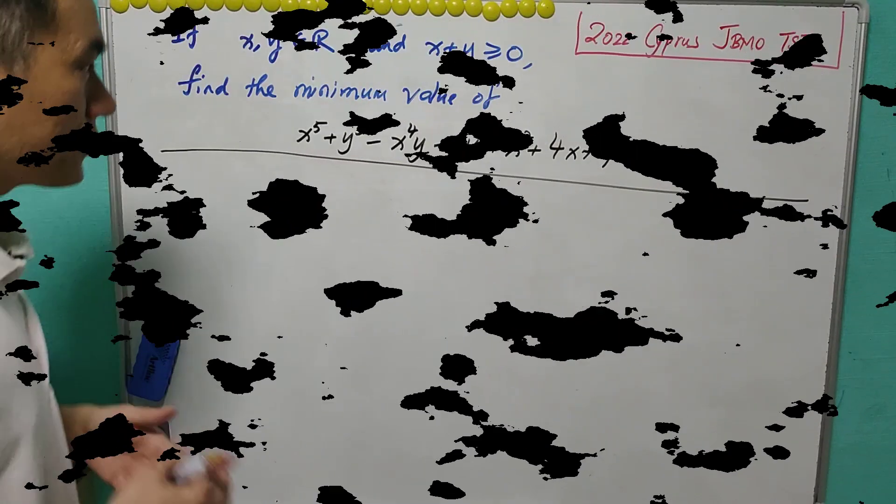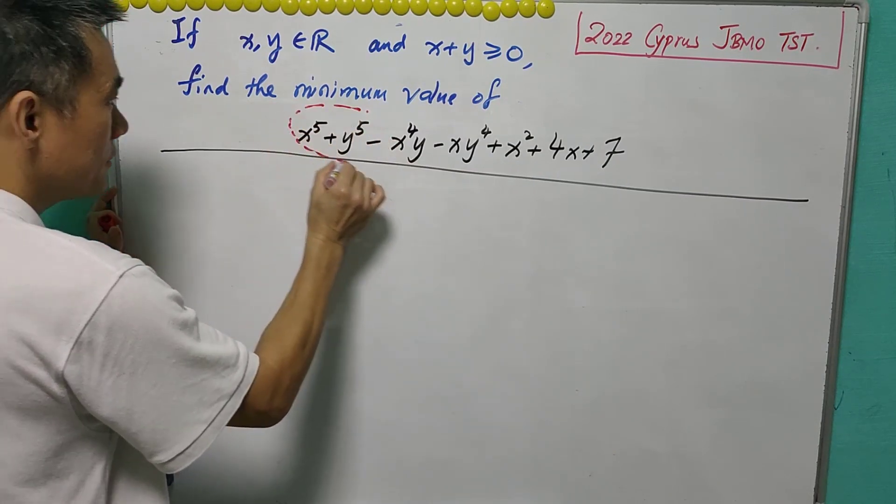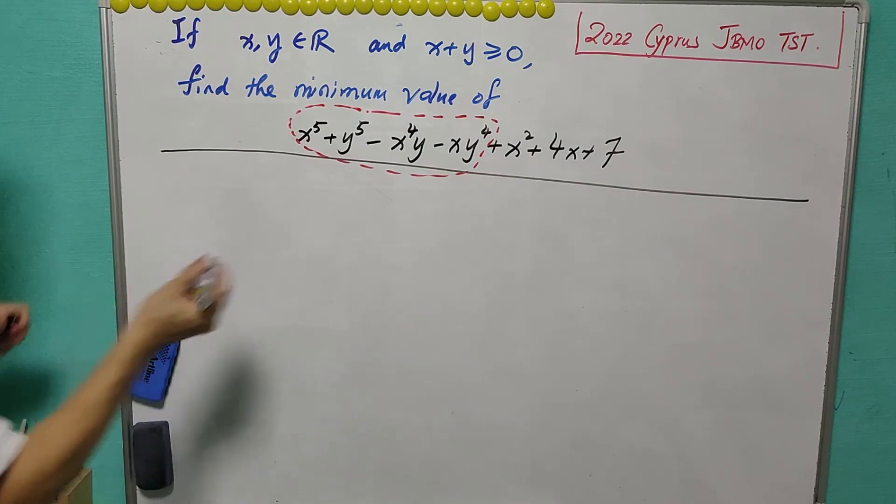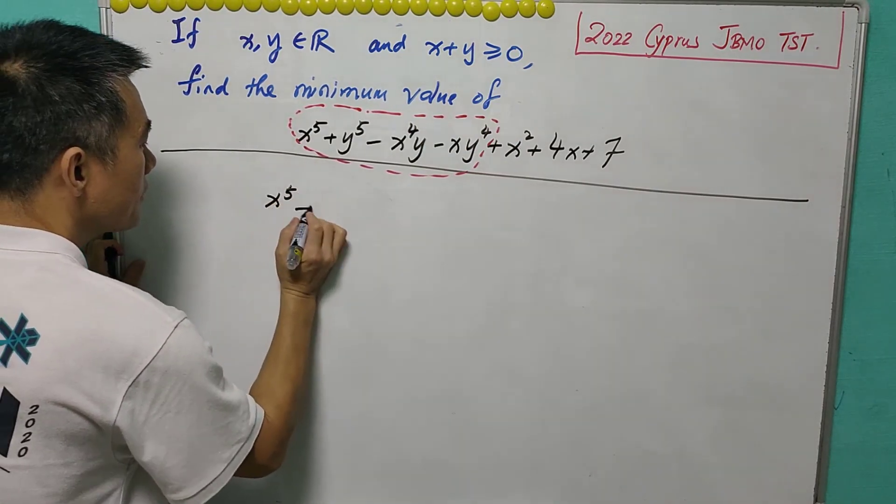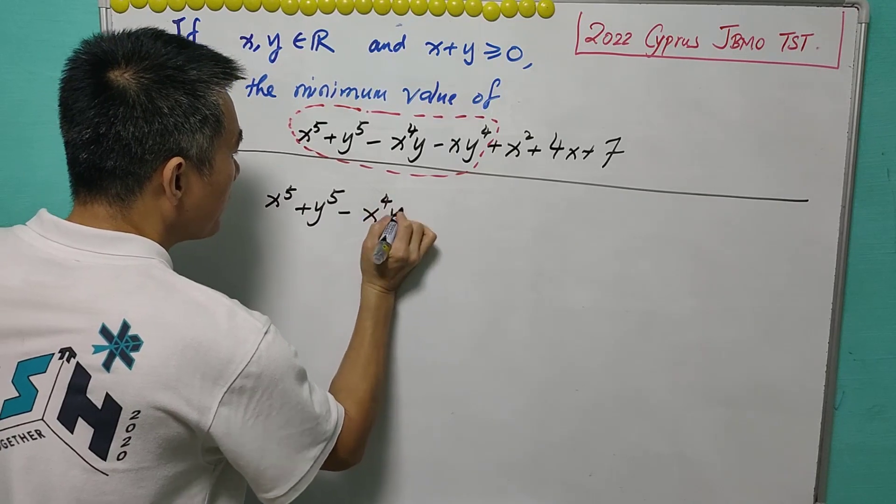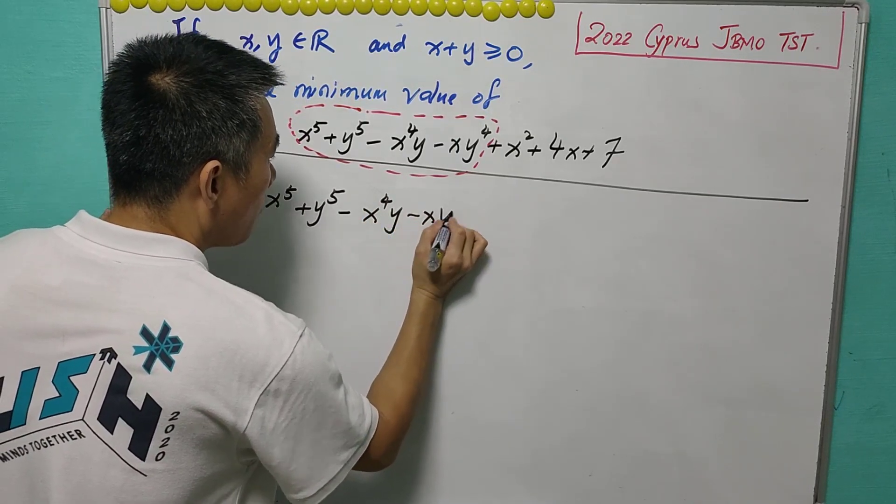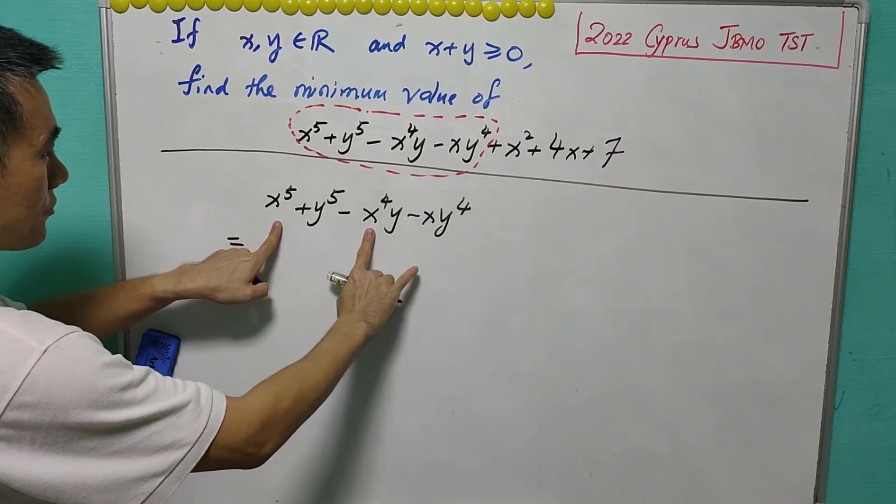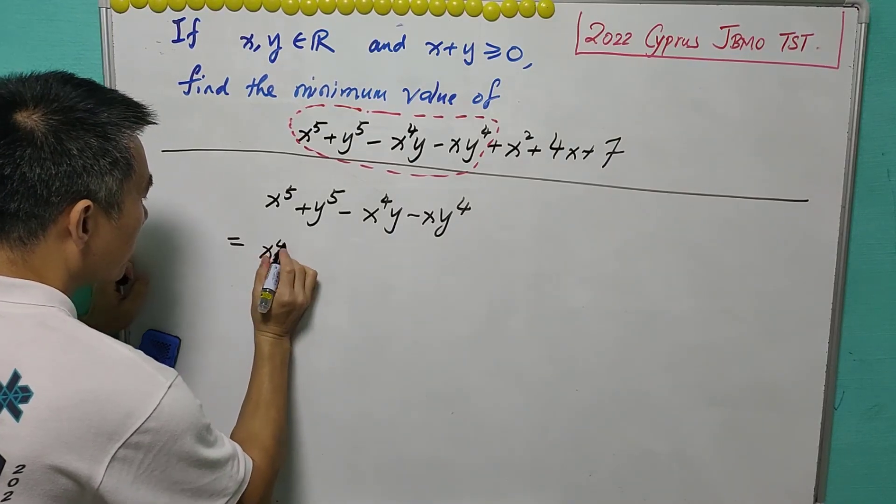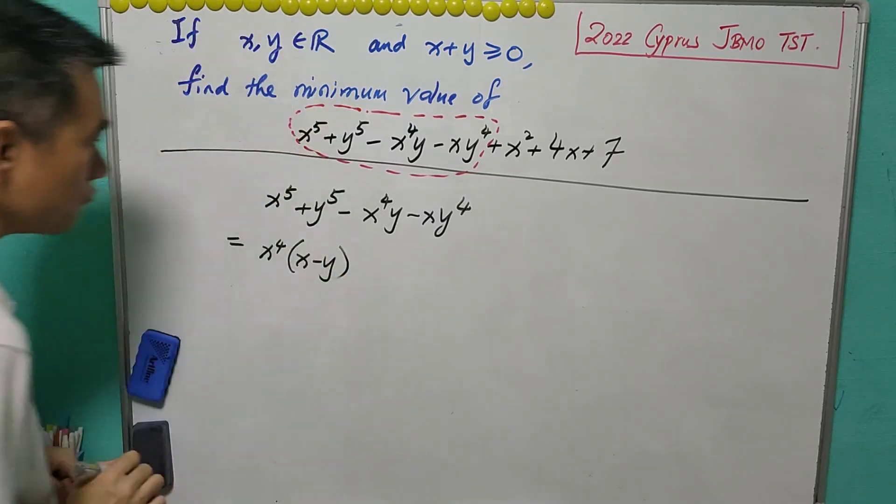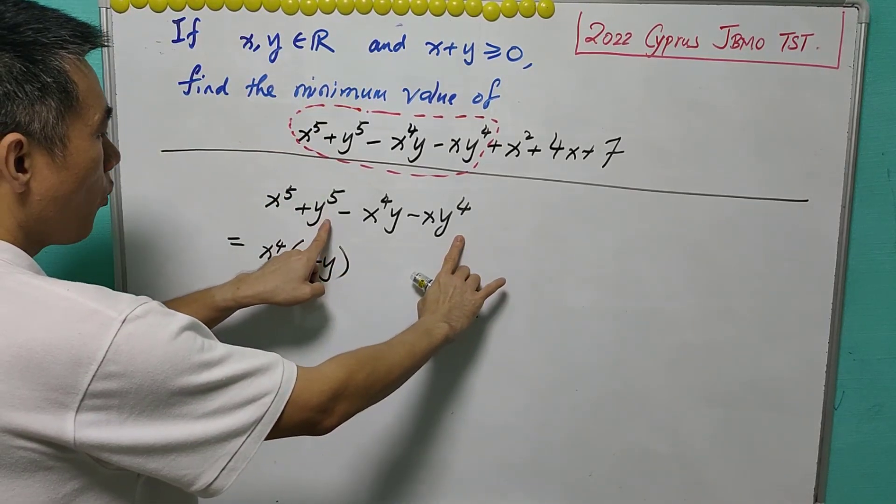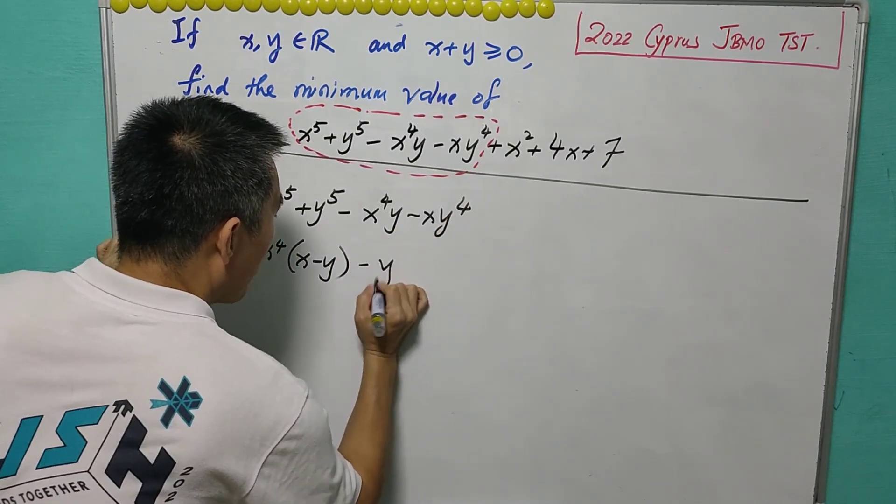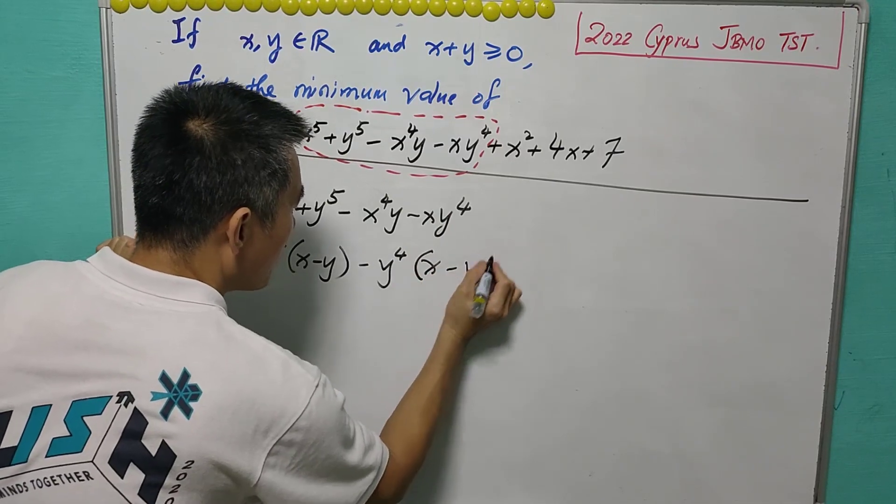So as suggested, we look at these first four terms. So this is x^5 plus y^5 minus x^4y minus xy^4. Now, there is x^4 and x^4 here. So it is x^4, x minus y. And for this, there's y^4 and y^4. And we can take out a negative y^4. Then this is x minus y.